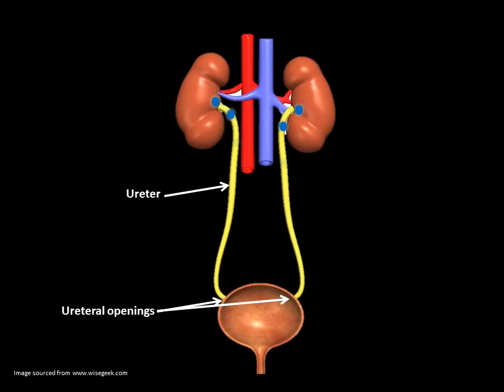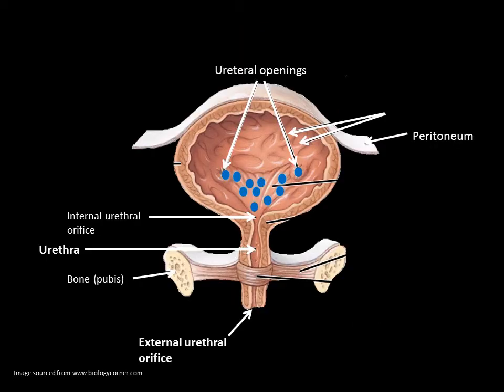The urine travels down the ureter and enters the bladder at the ureteral openings and is stored in the bladder until urination occurs. The term for urination is micturition. The bladder can hold an average 500 to 600 ml of urine, though when the bladder exceeds 200 to 400 ml, stretch receptors within the bladder walls transmit impulses to the micturition centre in the sacral spinal cord.